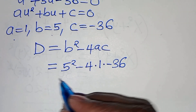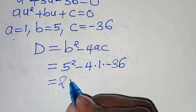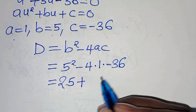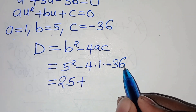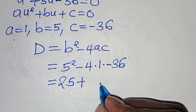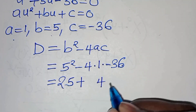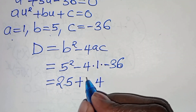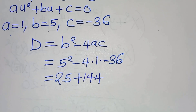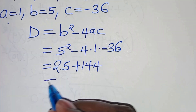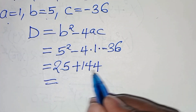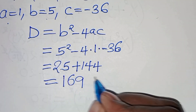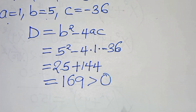So we have 5 squared, which is 25. Minus times minus gives plus, and 4 times 36 is 144. So we have 25 plus 144, and this is equal to 169, which is greater than 0.